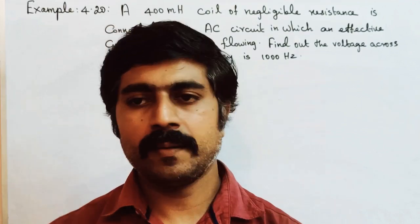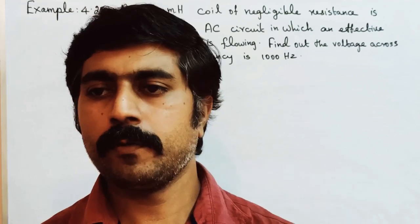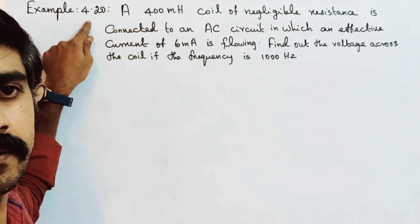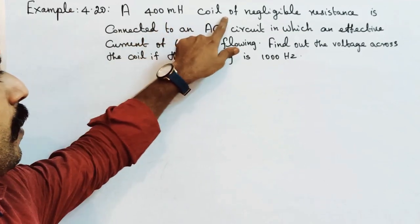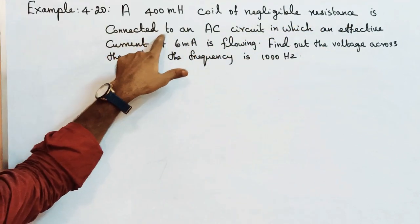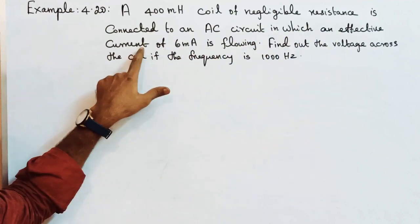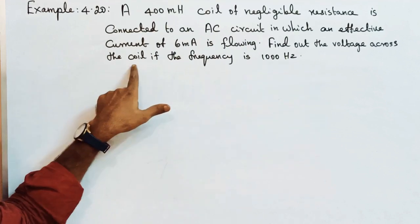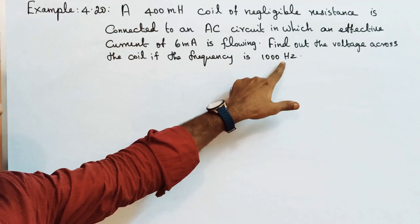Hi students, in the 12th physics level 4th lesson video, see the problem example 4.20. A 400 millihenry coil of negligible resistance is connected to an AC circuit in which an effective current of 6 milliampere is flowing. Find out the voltage across the coil if the frequency is 1000 hertz.